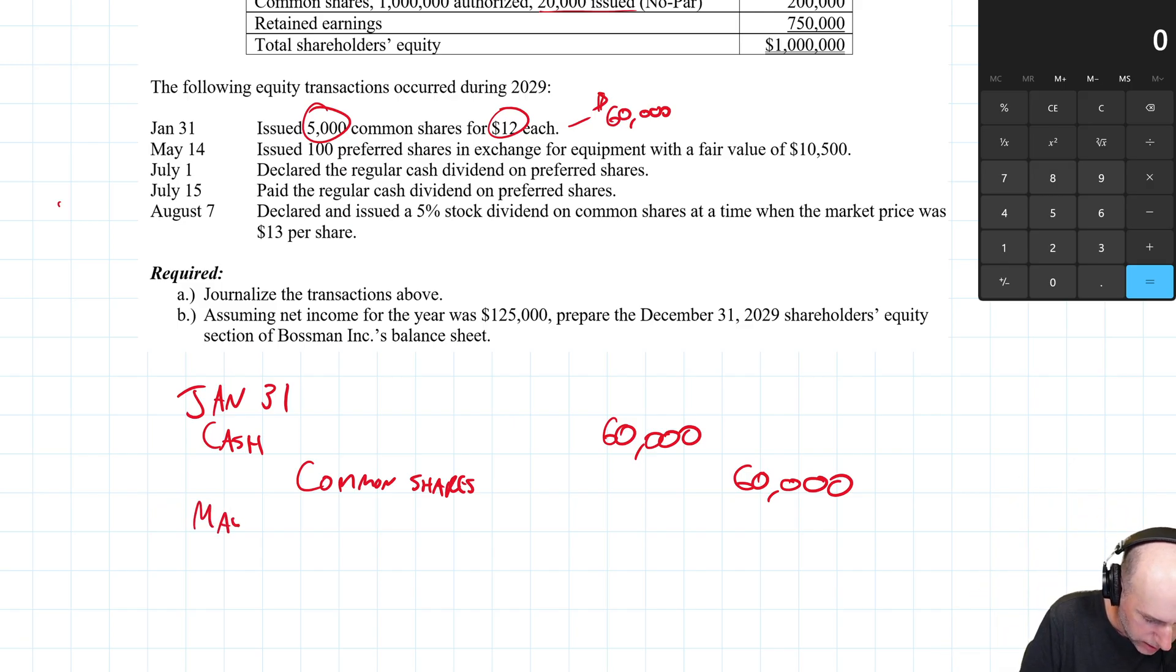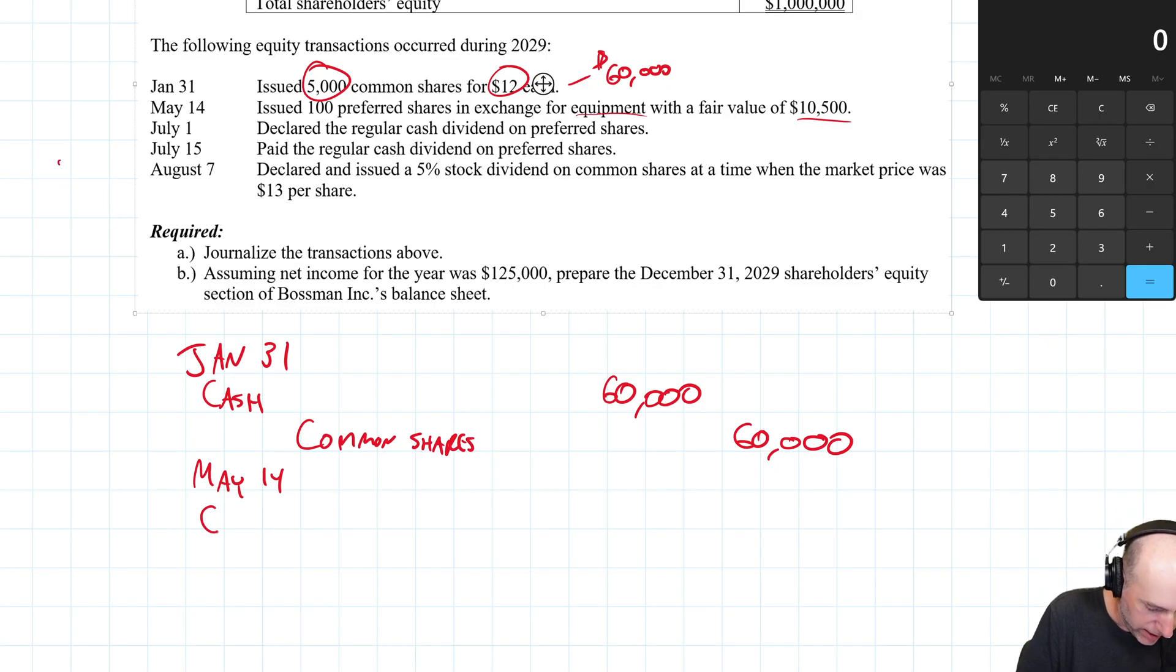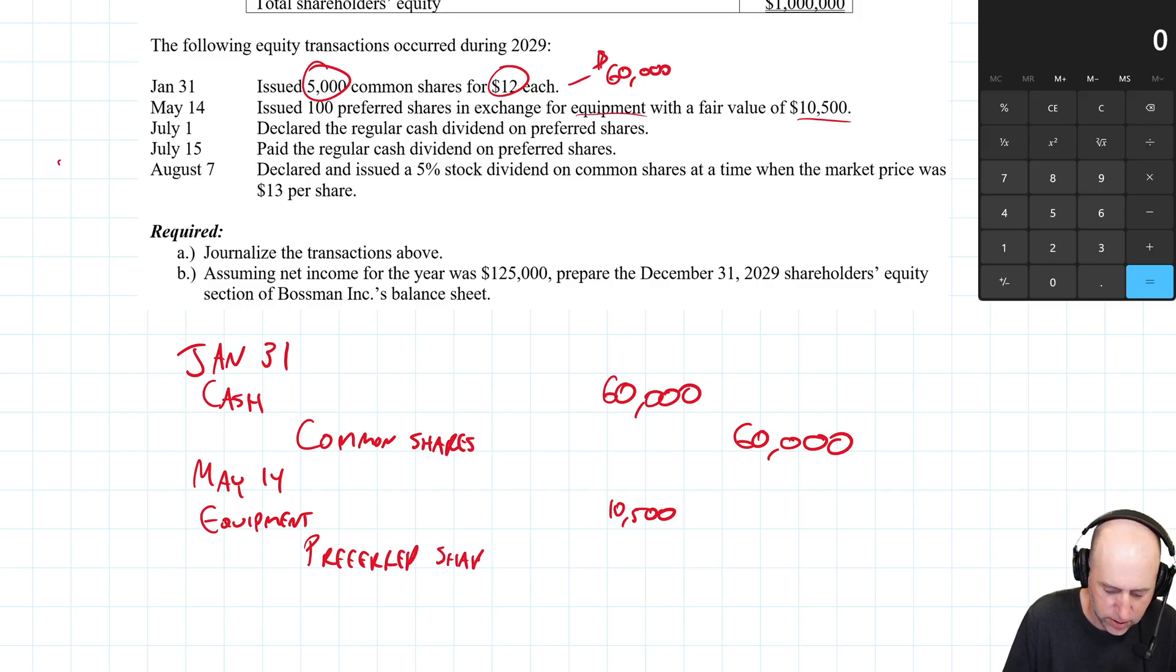May 14th. Issued preferred shares. Well, issuing preferred shares, just like issuing common shares, we issued 100 shares in exchange for equipment with a fair value of $10,500. Well, we got an asset, debit equipment, $10,500, and we credit preferred shares. And preferred shares, in terms of journal entries, behave a lot like common shares. So, it's just like we issue the share for an asset, debit the asset, credit the share. In this case, a preferred share.